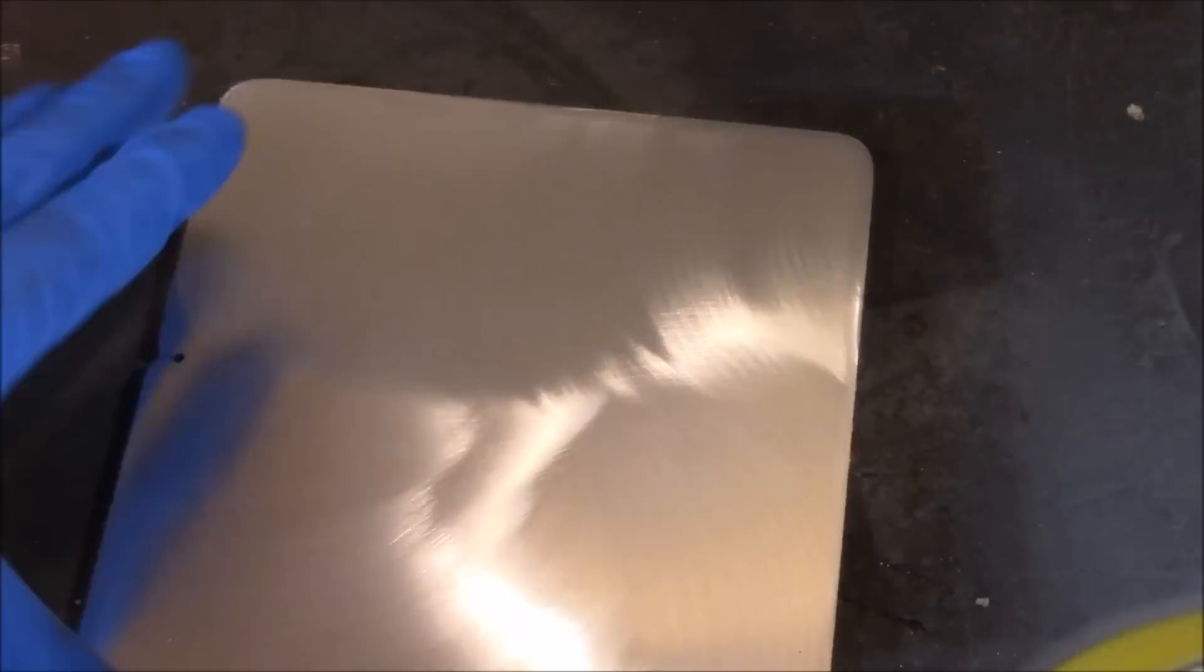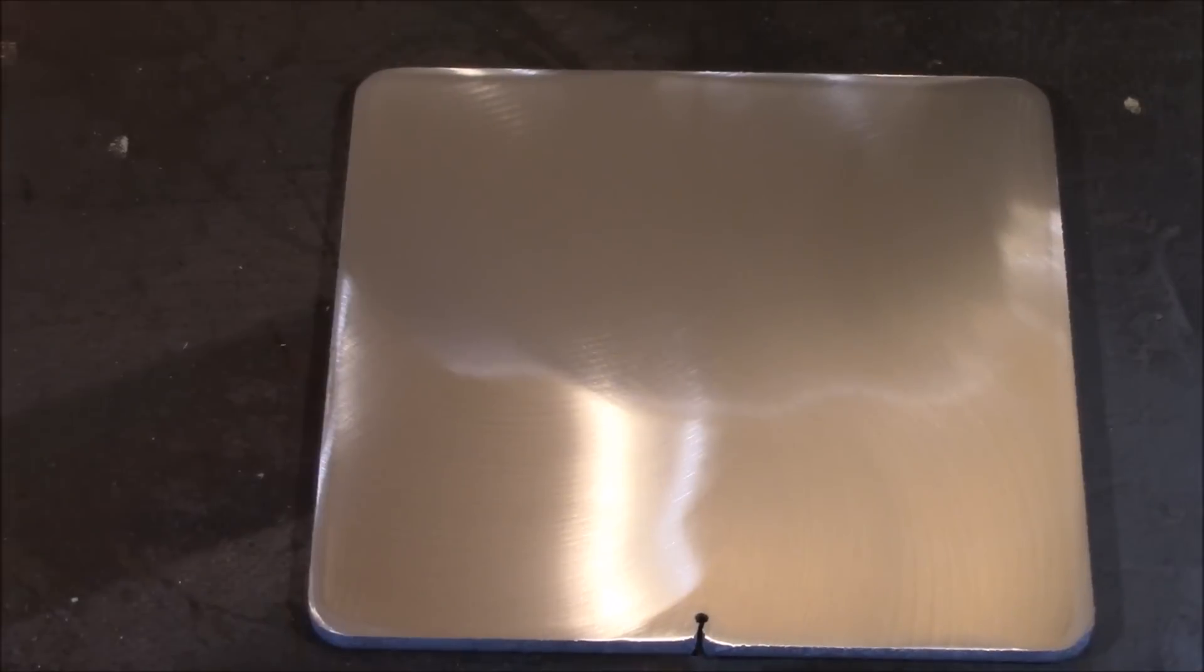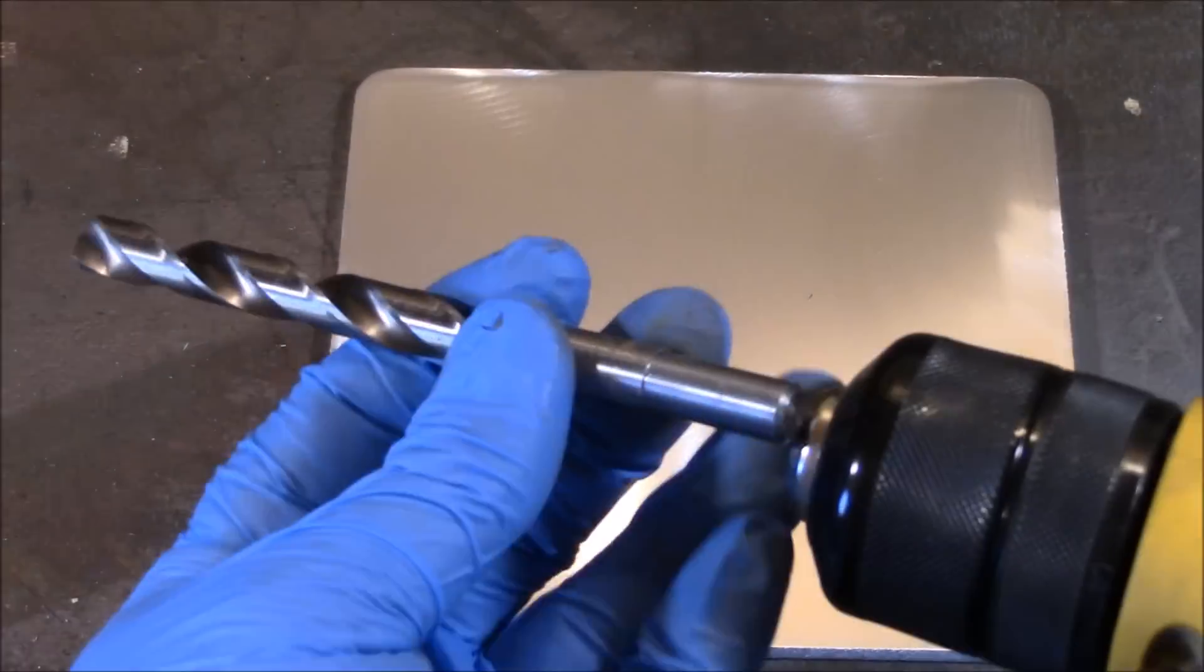Under normal conditions, aluminum is surrounded by a protective oxide layer. Metallic mercury isn't able to penetrate this barrier.